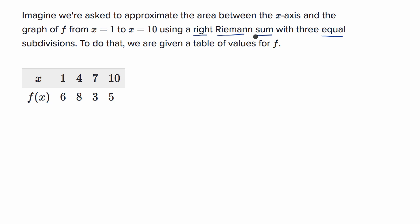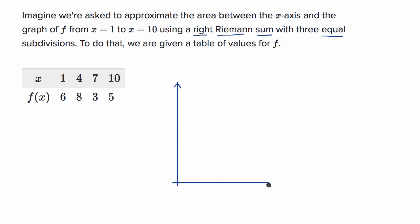So now let's try to do that together. This is interesting because we don't have a graph of the entire function, but we just have the value of the function at certain points. As we'll see, this is all we need in order to get an approximation for the area. Let me draw some axes here because whenever I do Riemann sums, it helps to think about what's going on if you can visualize it graphically.